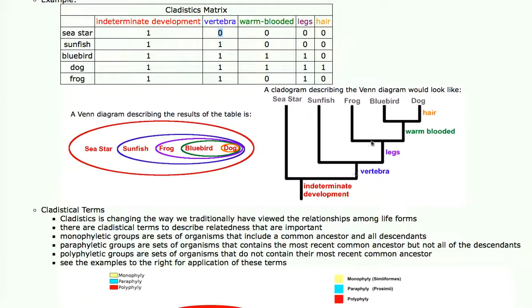A cladogram to represent the evolutionary relationships among these life forms, based on these features, would look like this. We have the evolution of an ancient life form that diverged. In other words, the life form diverged into two different species. One of them led to the sea star, and the other species led to animals with a backbone. This animal with a backbone evolved into sunfish but also evolved to grow legs, and then evolved some of them into frogs. But then another species evolved warm-bloodedness and became a bluebird, and yet another became a dog.